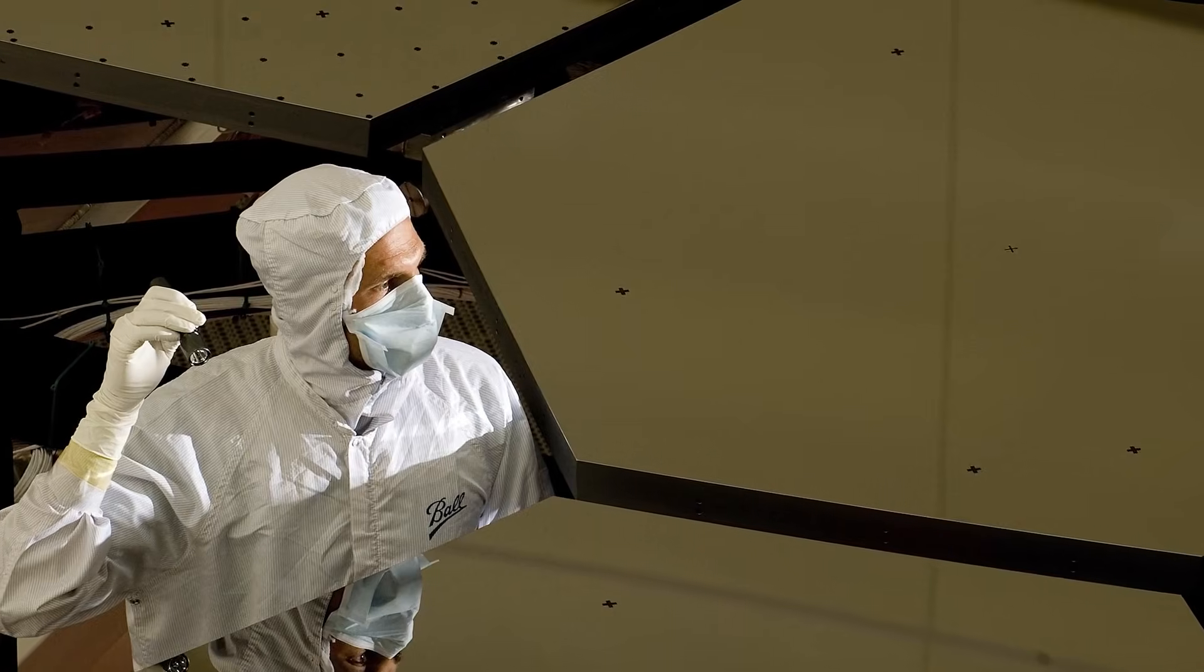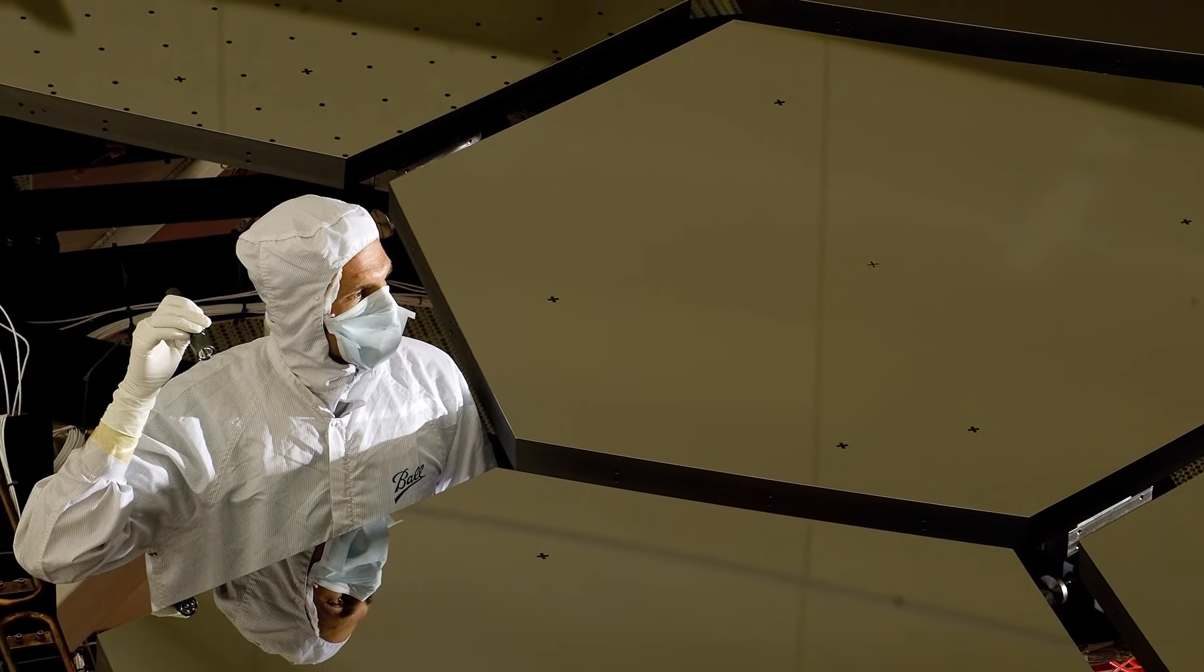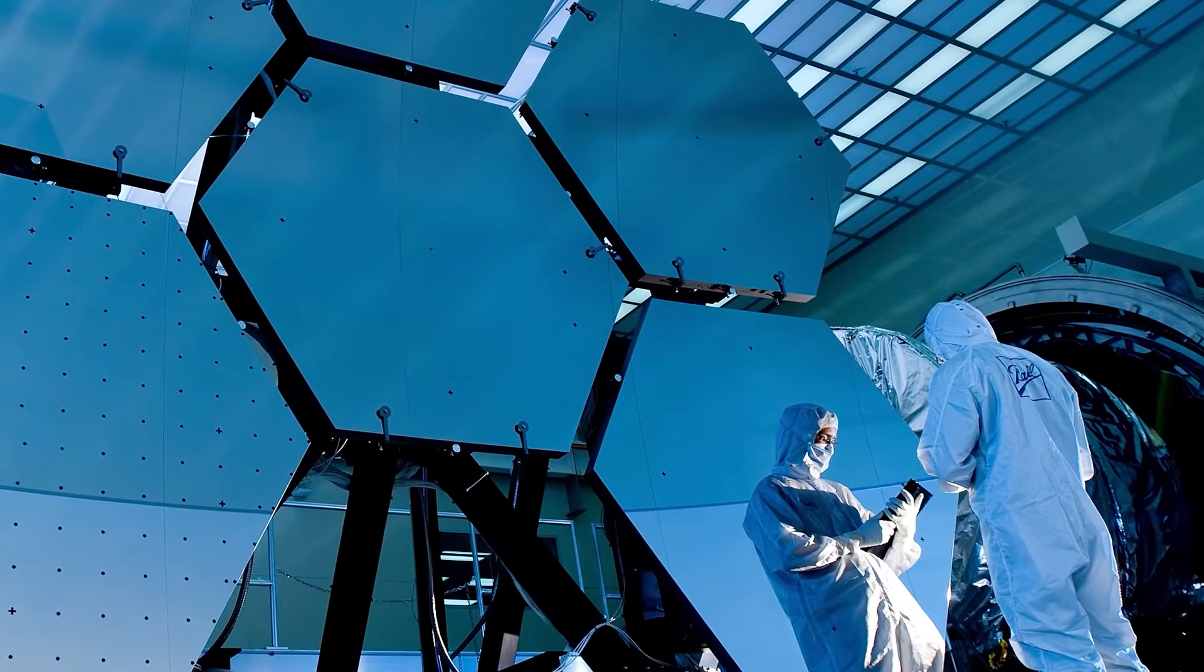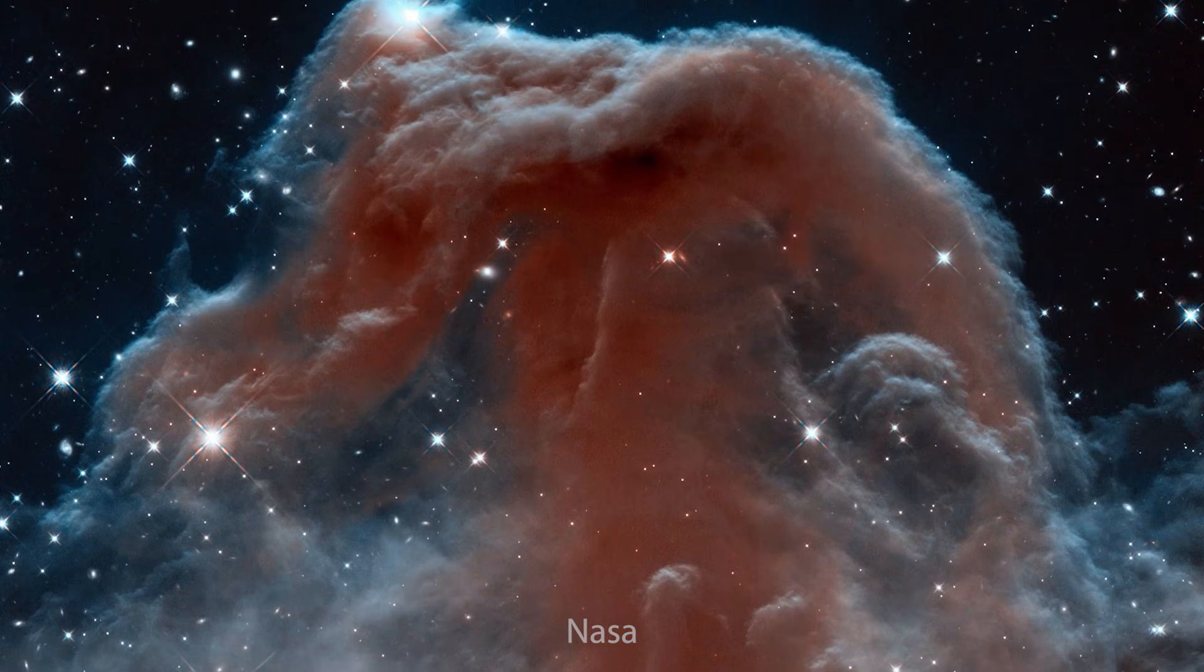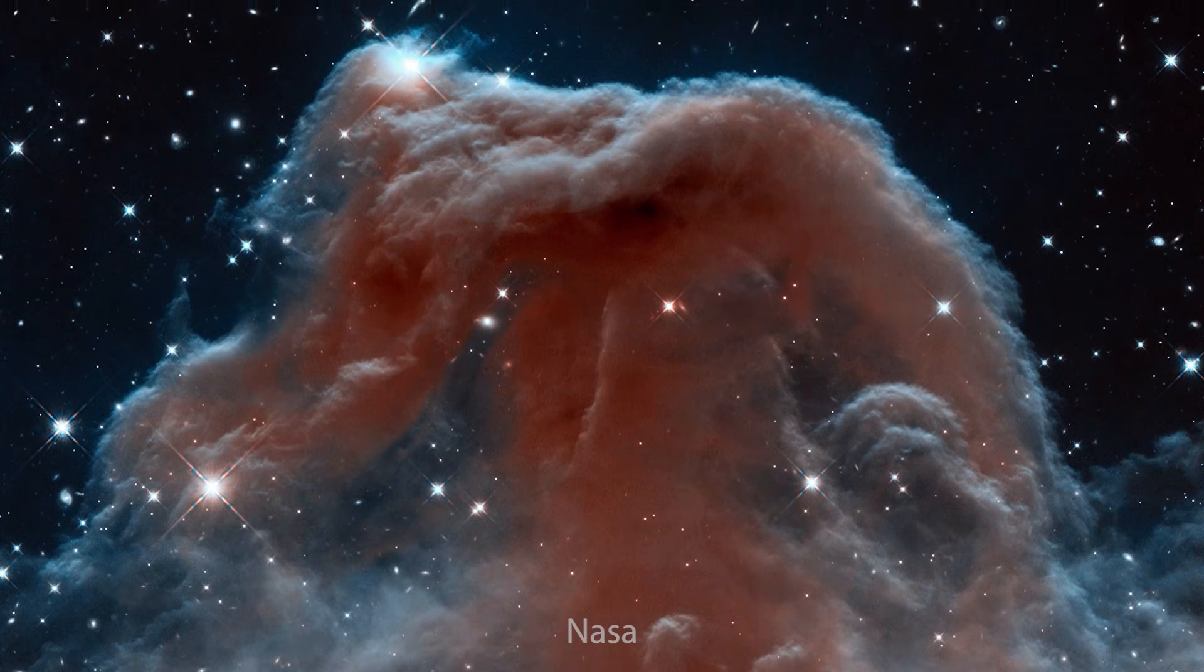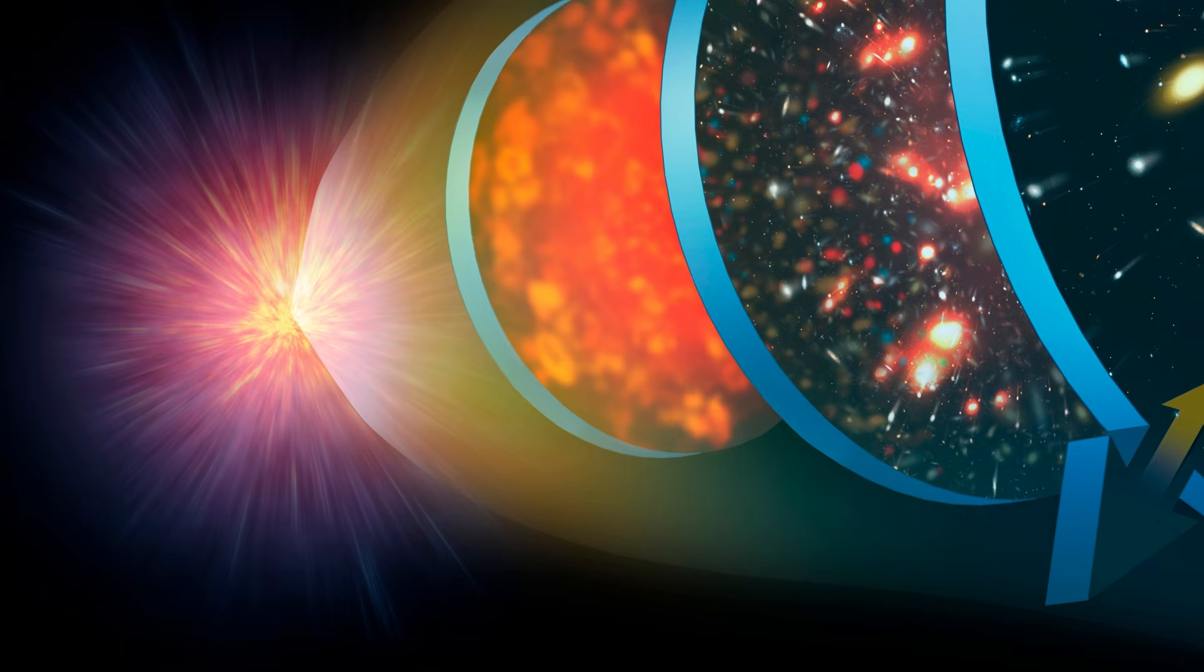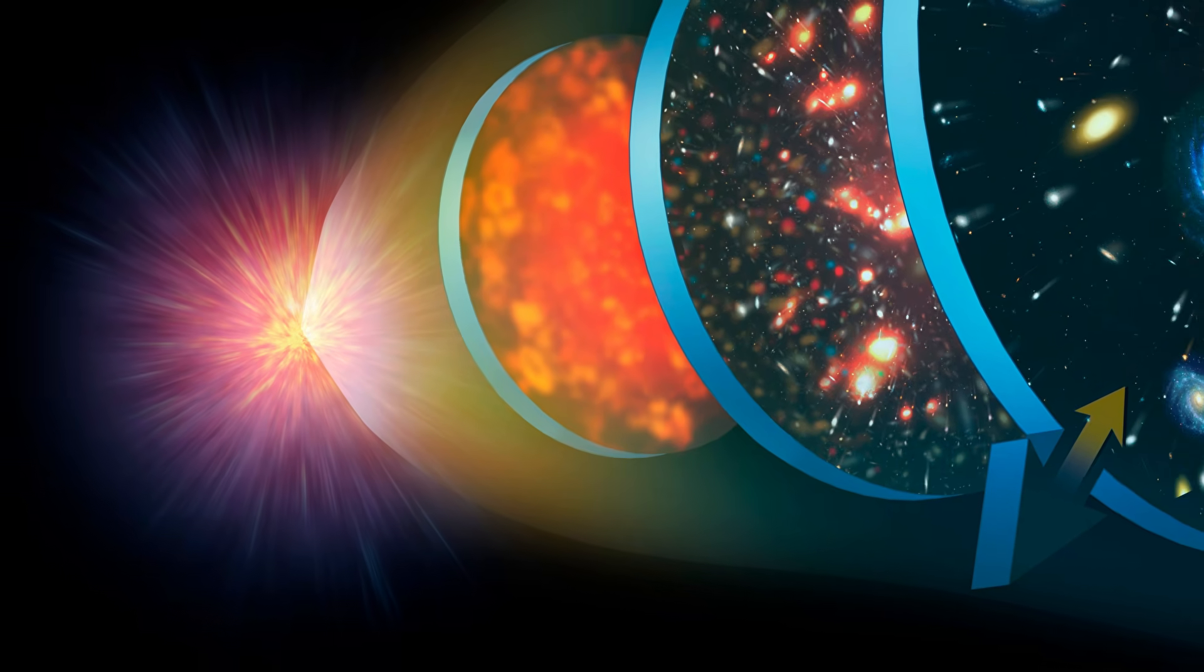When scientists developed instruments sensitive enough to detect microwave radiation, they discovered something astonishing. No matter where they looked—north, south, up, down—they detected the same faint signal. A uniform glow filling the entire sky.